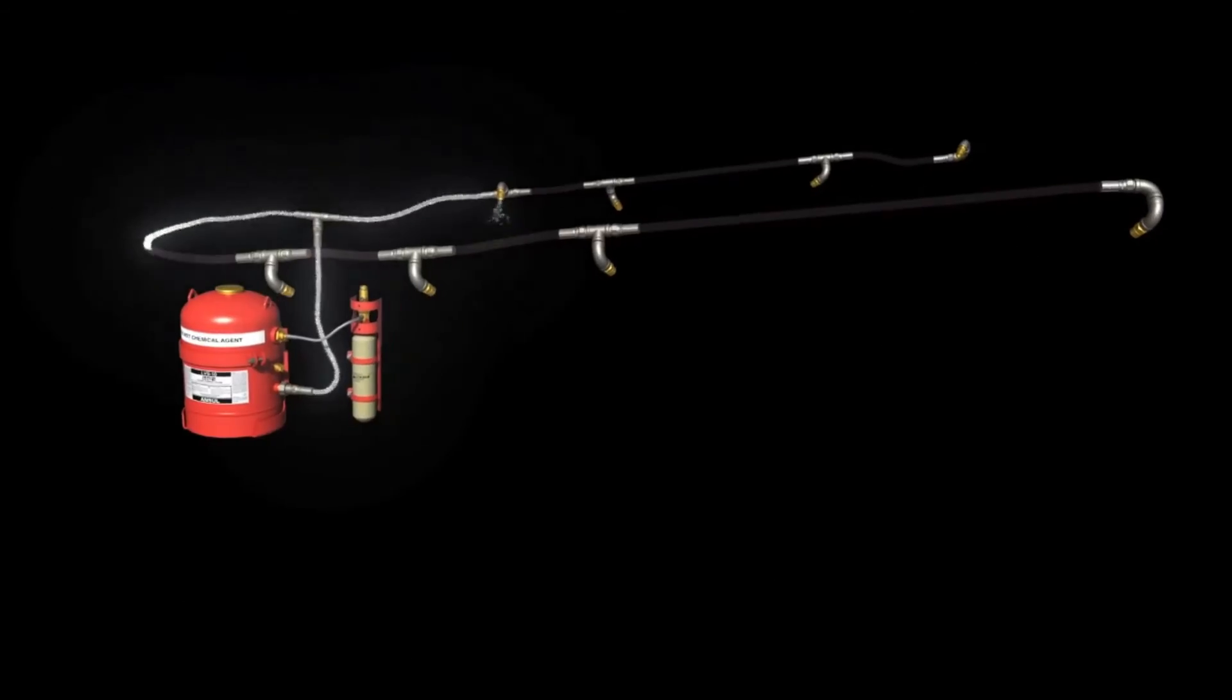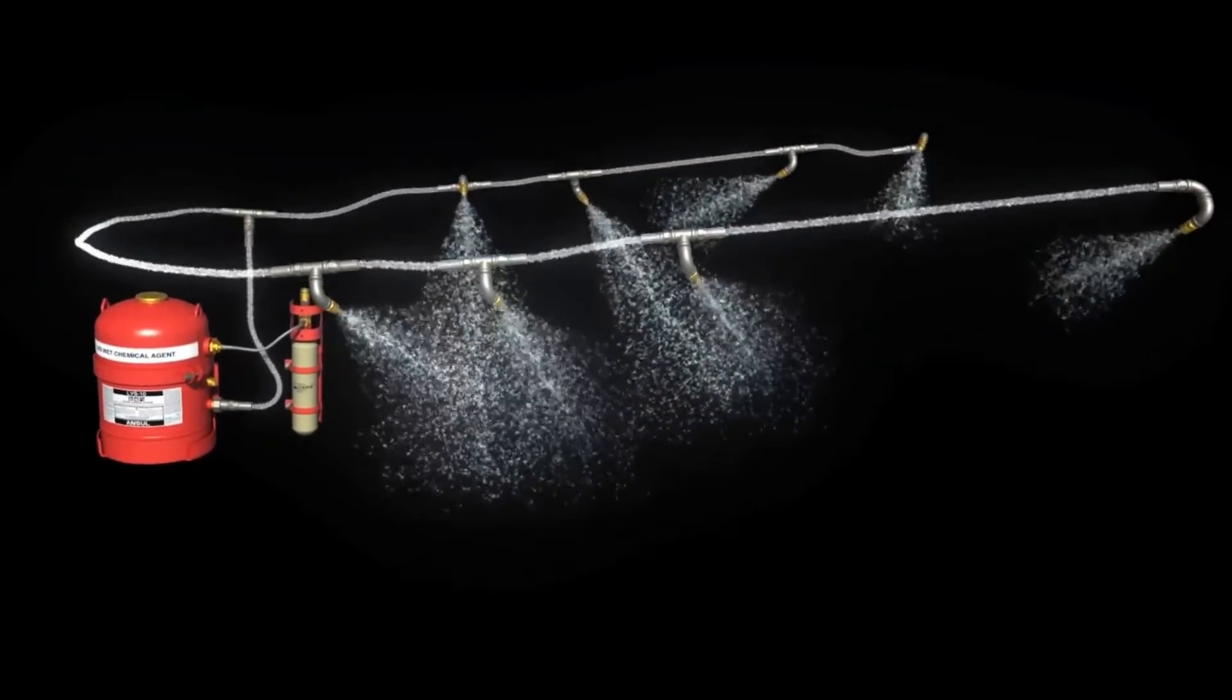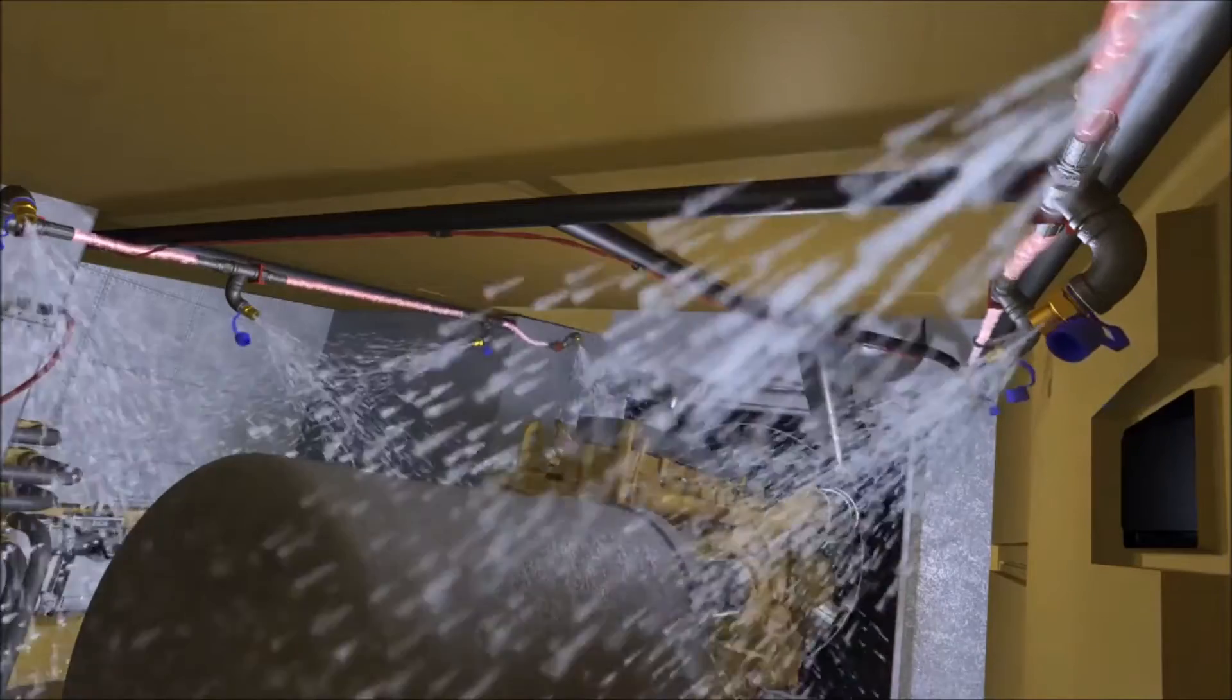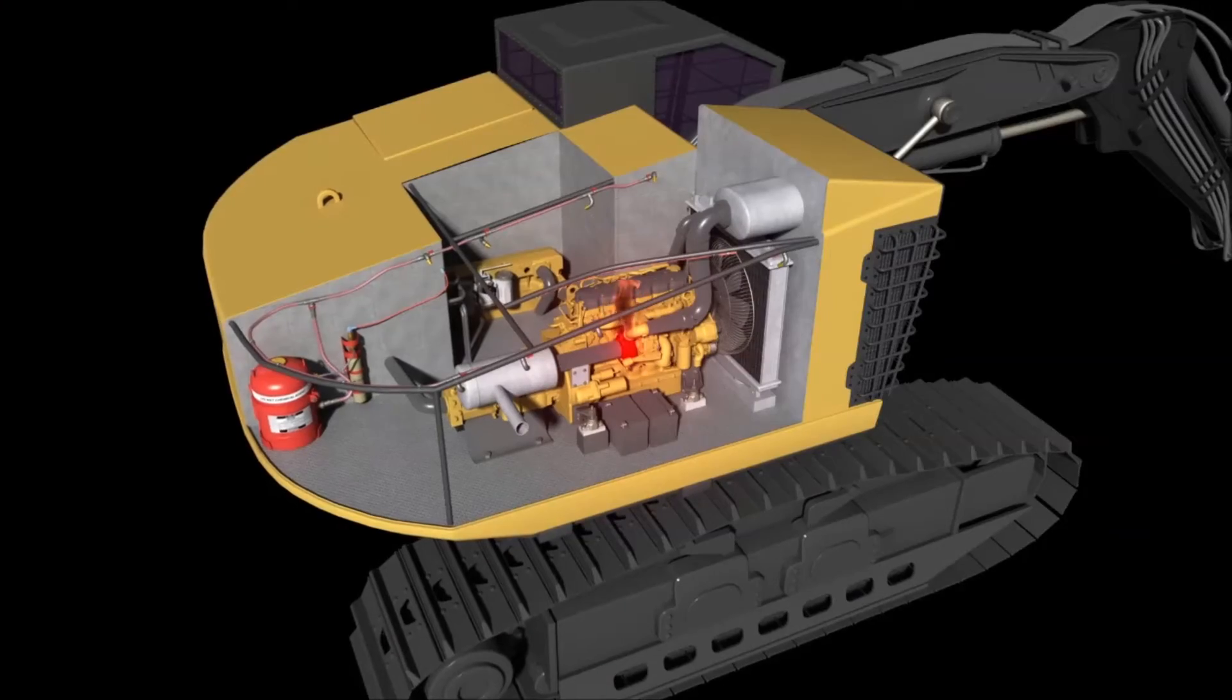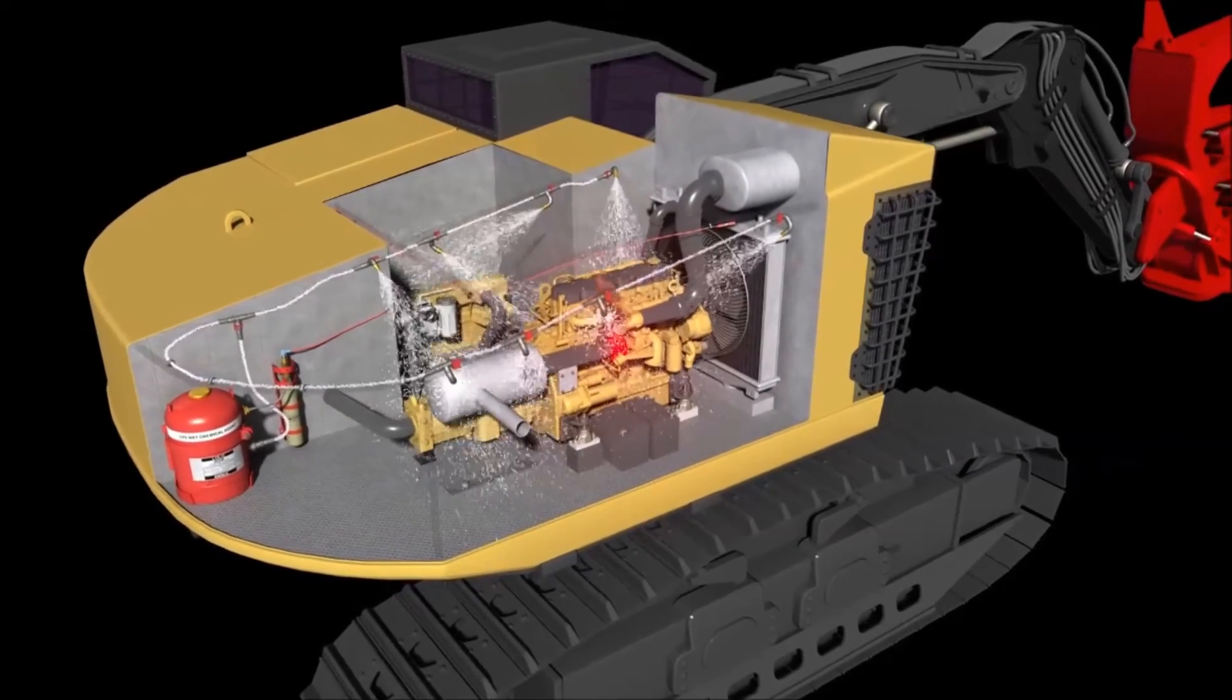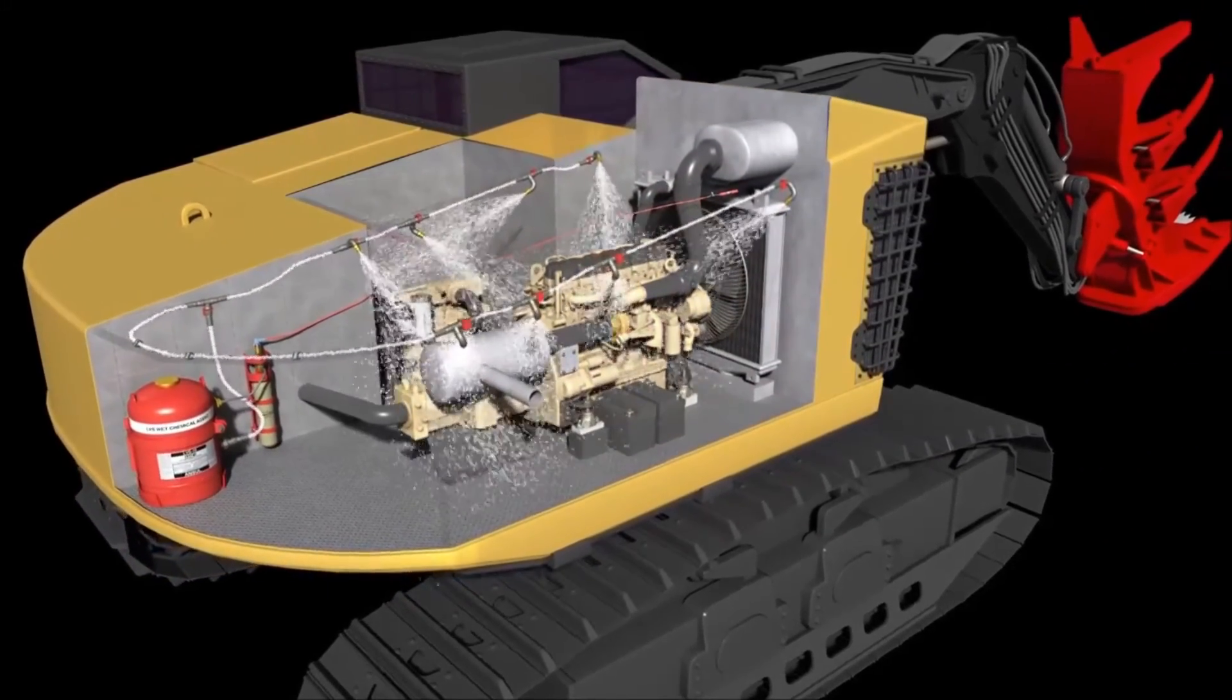The LVS liquid agent is distributed throughout the hose network to nozzles designed to cover specific hazard areas. The agent is then released under constant pressure for the duration of the discharge. It quickly floods the protected area to suppress the fire and simultaneously cool the hazard to help prevent fire reflash.